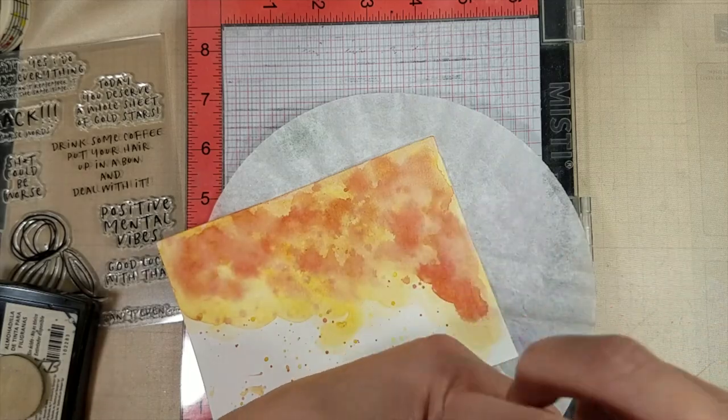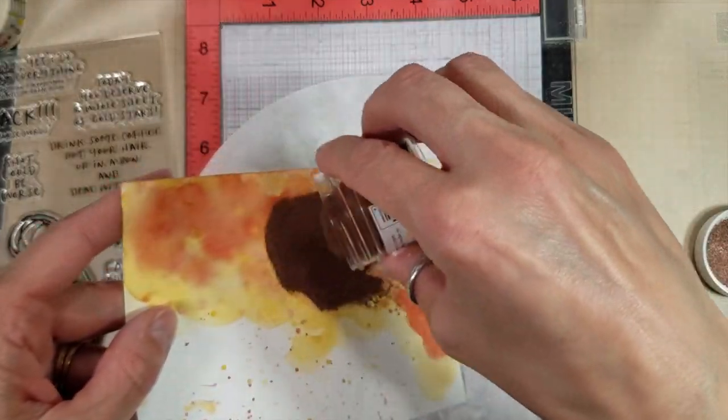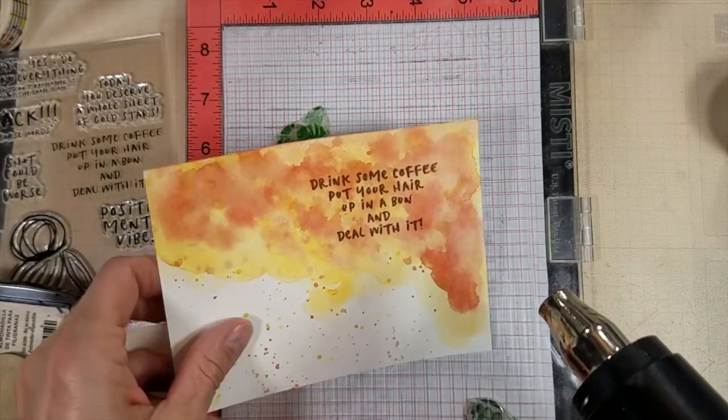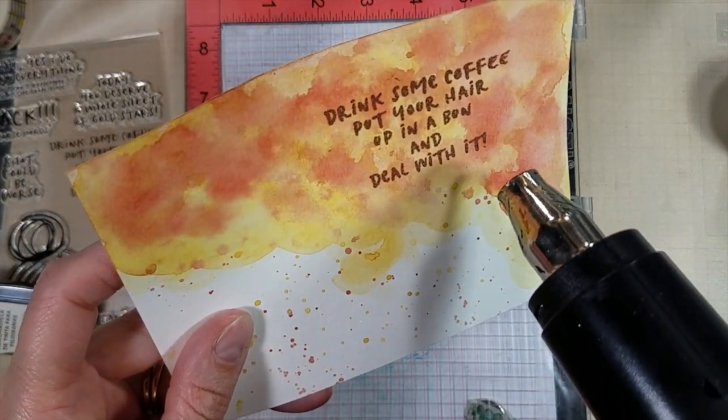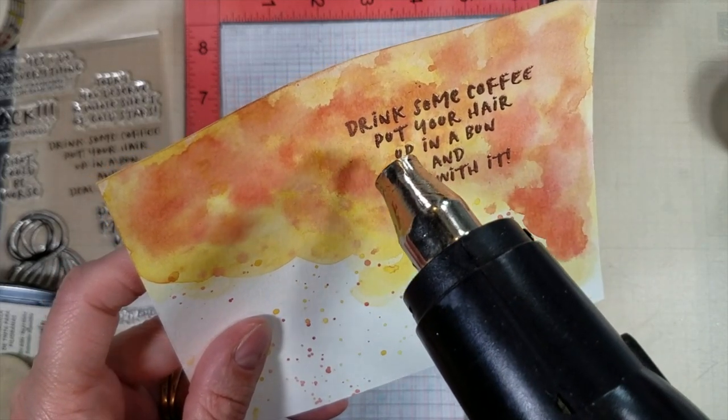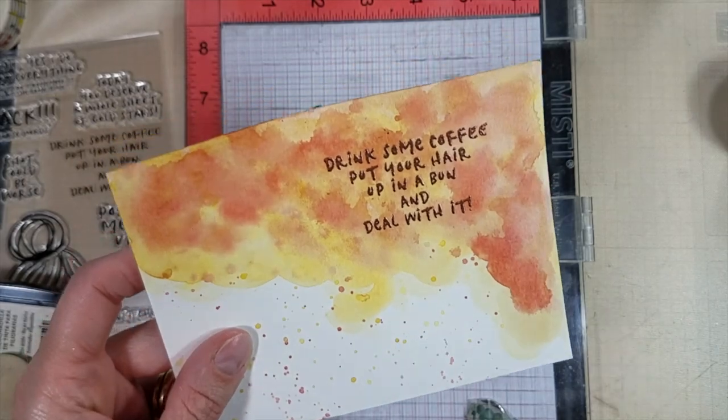Using some copper embossing powder on that. And that goes very well. So I'm going to heat set that quick. We want it to look shiny and raised. There it is. Drink some coffee, put your hair in a bun, and deal with it.